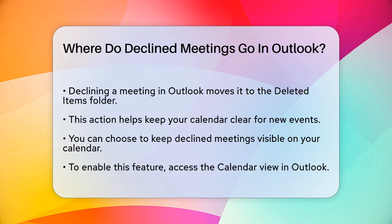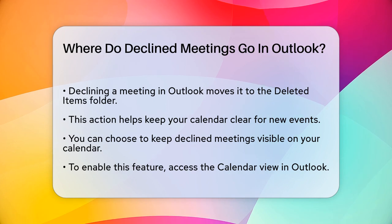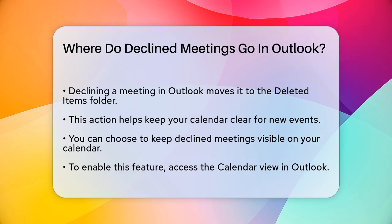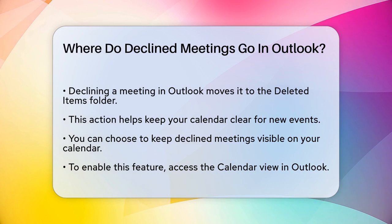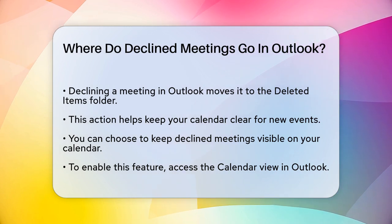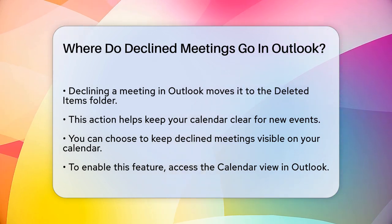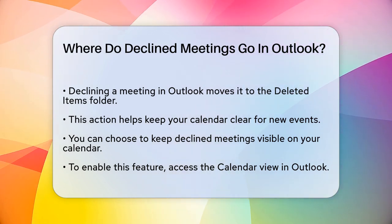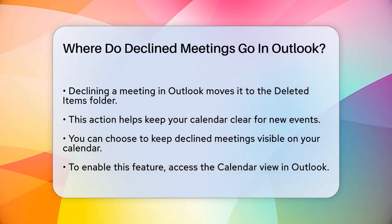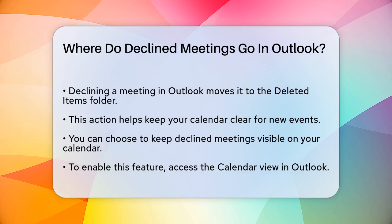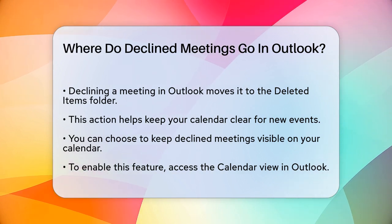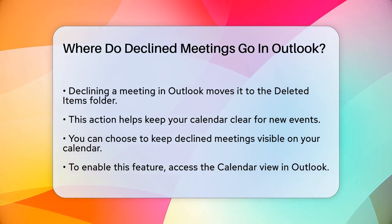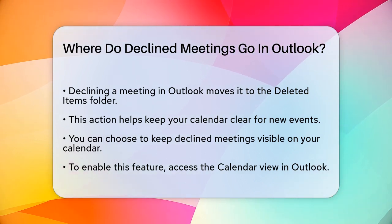When you decline a meeting invitation in Outlook, the meeting request typically gets moved to your Deleted Items folder. This is because, by default, Outlook removes declined meetings from your calendar to keep it clear and available for scheduling other events.